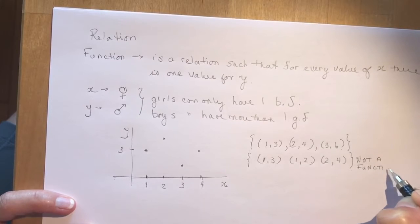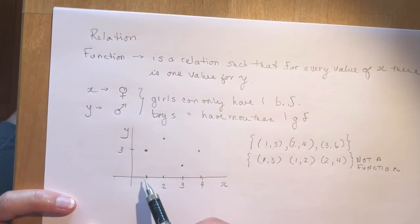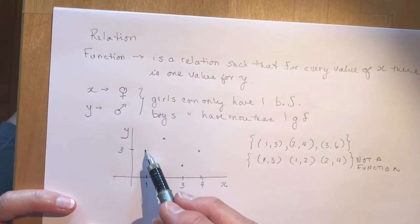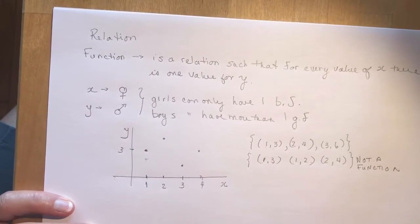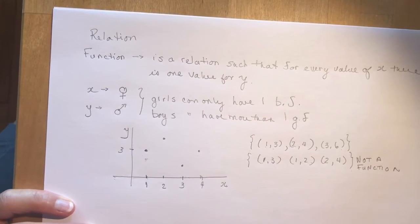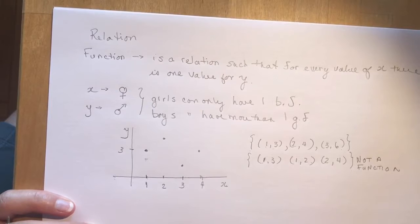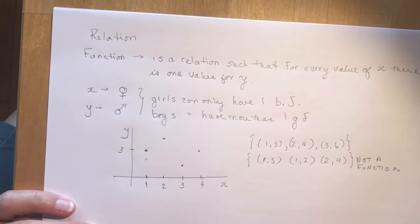And of course if you graphed that, one had three and one also had two, so there would be two values on top of one another. A more realistic example: if you go to the post office in Canada, they have the same rules — if you want a stamp, everybody pays the same price. You don't go in to buy one stamp and pay two different prices for it; that wouldn't be a function. So there are some realistic applications of what can be a function.